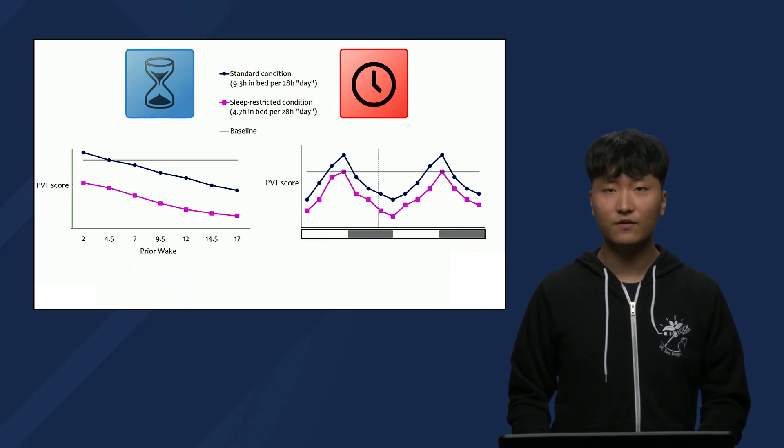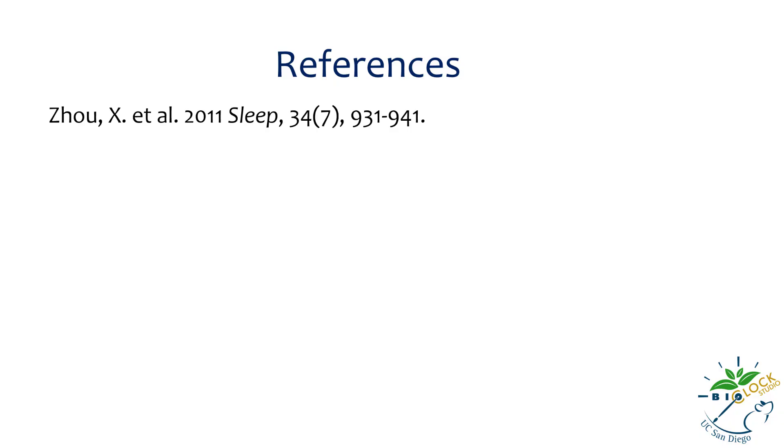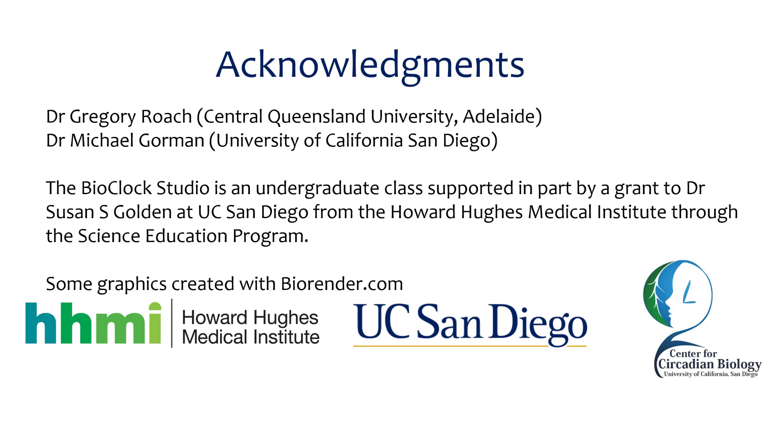In conclusion, forced desynchrony is an interesting and informative technique that circadian researchers use to measure process C and S in humans. By using tools like this one and the napping protocol we discussed in the previous video, researchers have been able to learn a great deal about the two processes C and S and how they affect us. Thank you for watching our video on exploring processes C and S. Please check out our other videos regarding circadian biology on our BioClock video channel.